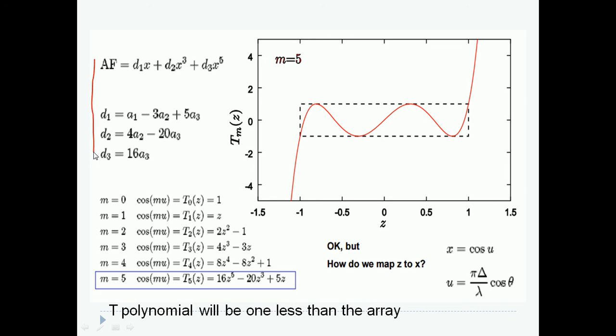This is all what we discussed in previous slide. I have to substitute an equivalent T polynomial, that is Chebyshev polynomial of M equals 5. Since my array factor is 6, Chebyshev polynomial would be always 1 less than the array element. We need to next choose the equivalent expression for the cosine terms in terms of Chebyshev.